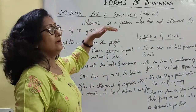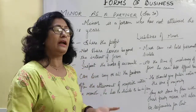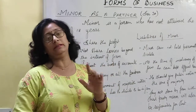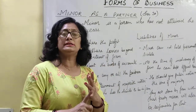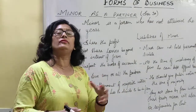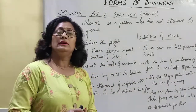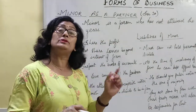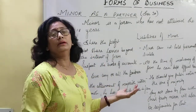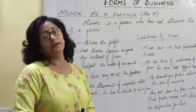If the other partners are agreed, then only the minor will be given the opportunity to enter the partnership. One more thing is that the guardian of the minor should give an agreement — the agreement is not with the minor, but with the guardian of the minor — and then the minor will enter the firm.